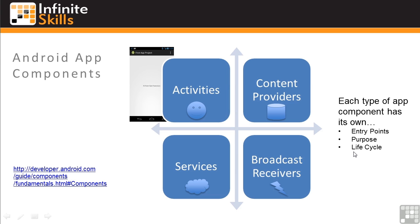We'll be looking at each of these in detail in coming lessons. For now, I'd like you to have an overview understanding of them and the roles they play. Activities you've already worked with in our first app. An activity is Java application code associated with a user display screen. In our first app, it displays our hello text. The main purpose of activities is to keep the user happy.